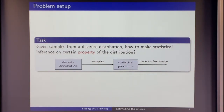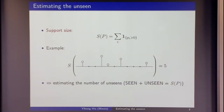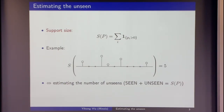The problem is of the following form. I have samples drawn from some discrete distribution, and I want to learn certain properties of the distribution, either through making a test, some confidence interval statement, or an estimate. The major example is 'estimate the unseen,' which is to estimate the cardinality of the support of the distribution — the number of non-zero masses — through repeated draws.